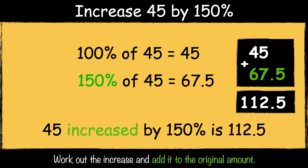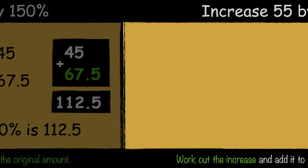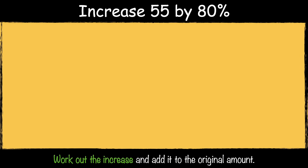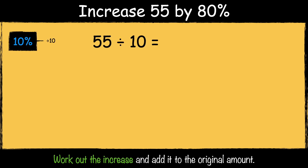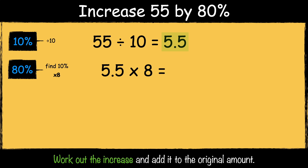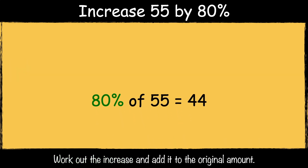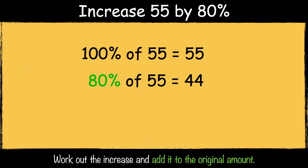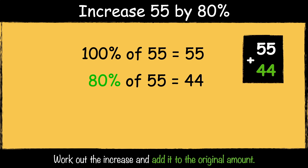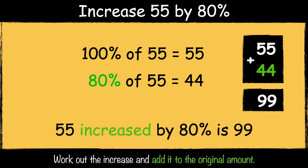So 45 increased by 150% is 112.5. Here's the last example: increase 55 by 80%. To work out 10% of a number we divide it by 10. So 55 divided by 10 is 5.5. We then multiply the answer by 8 to find 80%. 5.5 times 8 is 44. So 80% of 55 is 44. The next step is to add it to the original amount, so 55 add 44 is 99. So 55 increased by 80% is 99.